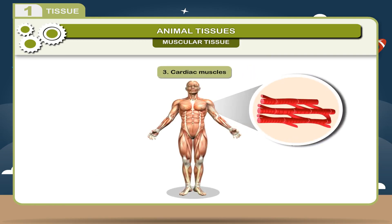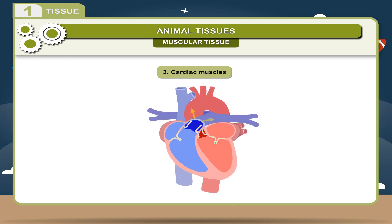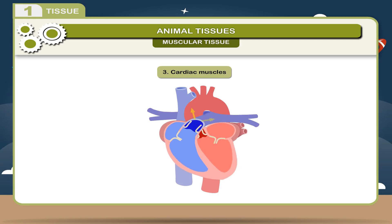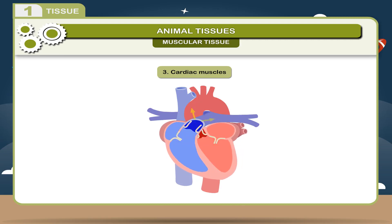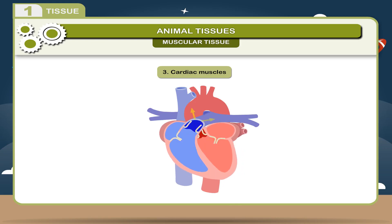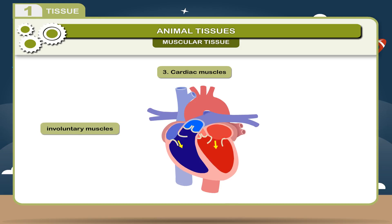3. Cardiac muscles: These are composed of branched cells that have striations on them. They are present only in the heart. They help in pumping blood to the different parts of the body. They are responsible for the expansion and contraction of the heart and are involuntary muscles.